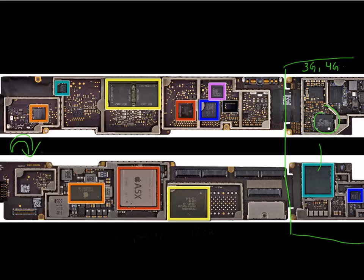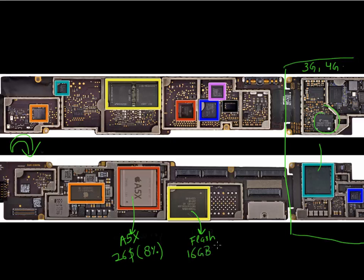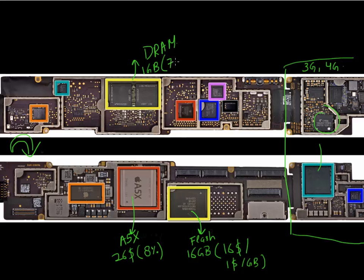Let me point out the main components and their costs. The A5X microprocessor costs $26, or around 8% of the $310 bill of materials. The 16 gigabyte flash memory chip costs around $16, which is $1 per gigabyte. The DRAM memory — iPad comes with 1 gigabyte of DRAM — costs $7.60.